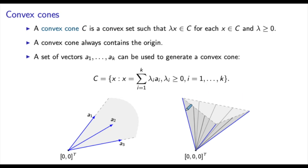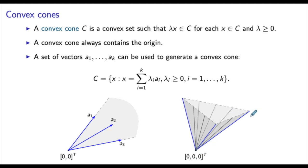In the three-dimensional case, three vectors generate a convex cone by considering all combinations of the form described. The resulting vectors belong to the gray area shown, illustrating how a convex cone looks when generated by three directions in 3D.